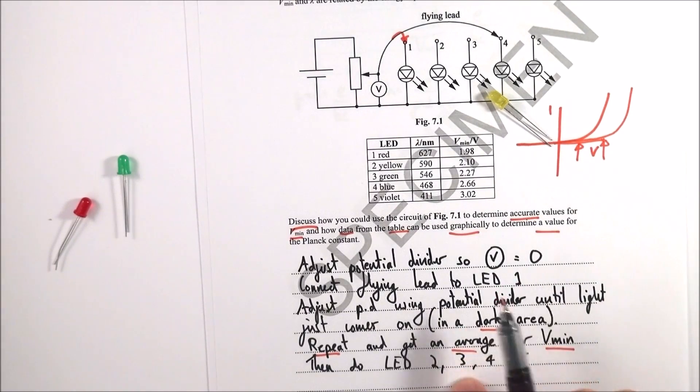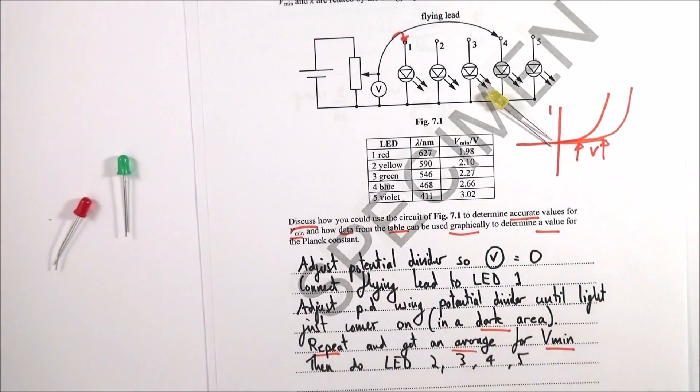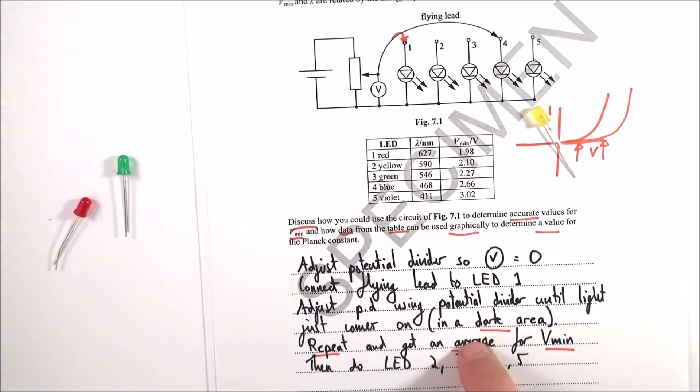You then do the same for LEDs two, three, four, and five. Spell it out for the examiner. Treat them like someone who doesn't know what you're talking about. Spell out what is obvious - you're going to do it to one, then two, then three, then four, then five. Make it very clear in your answer.